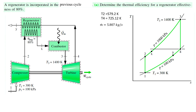Let's quickly look at an example related to the Brayton cycle with regeneration, where a regenerator with 80 percent effectiveness is incorporated. First, if given a question, make sure you draw the schematic if not provided, then draw the TS diagram if possible. Using air standard analysis, you need to find the enthalpies at all states: state 1, state 2, state 3, and state 4.